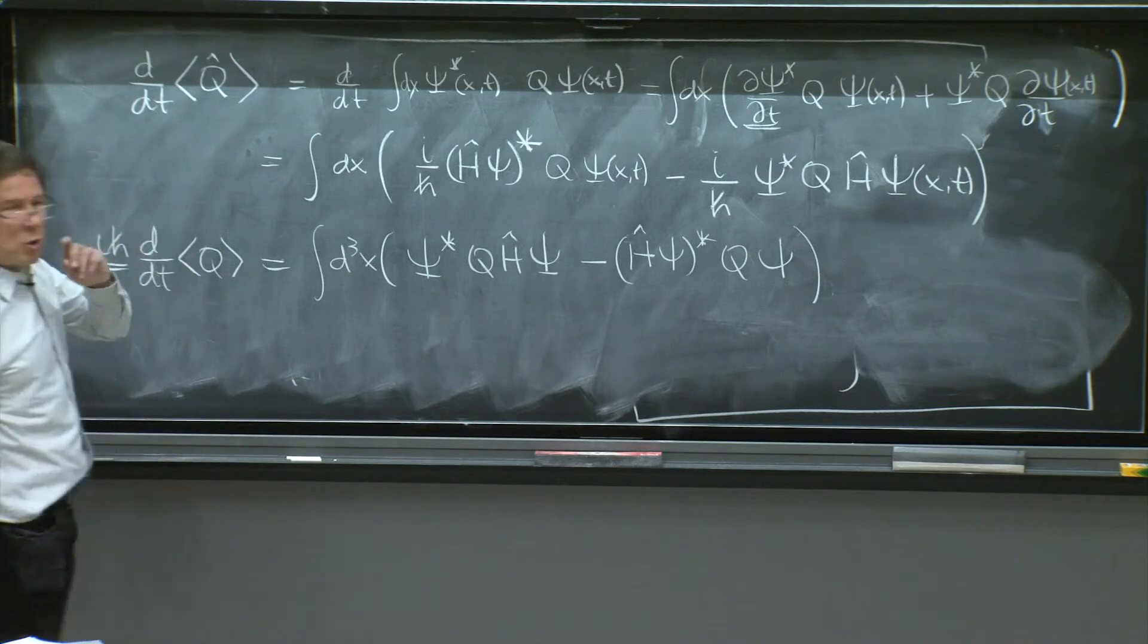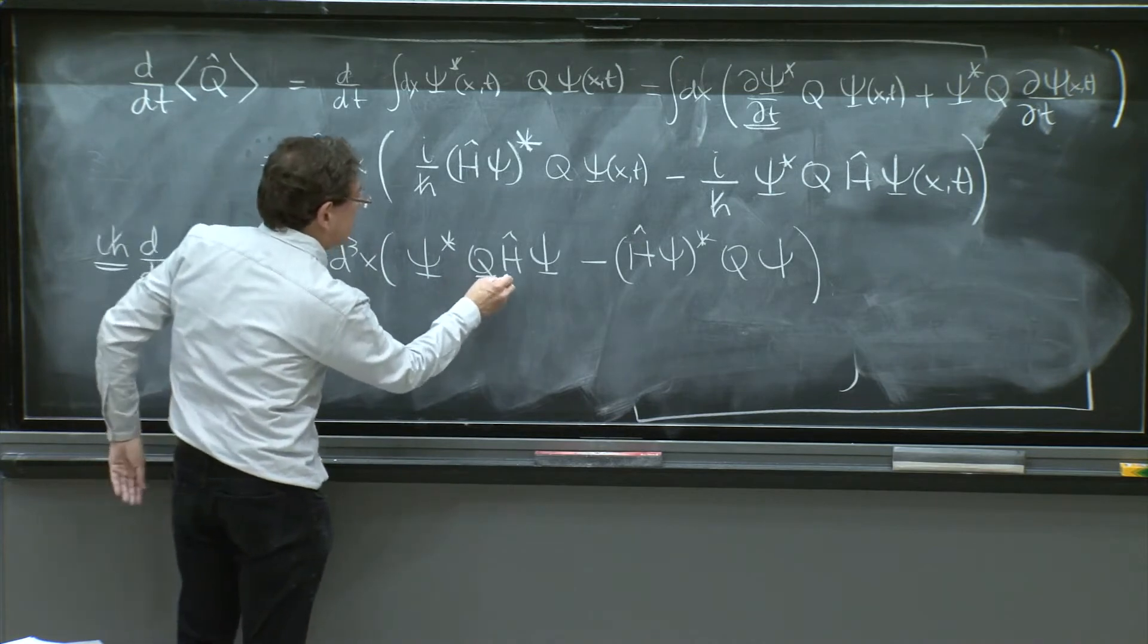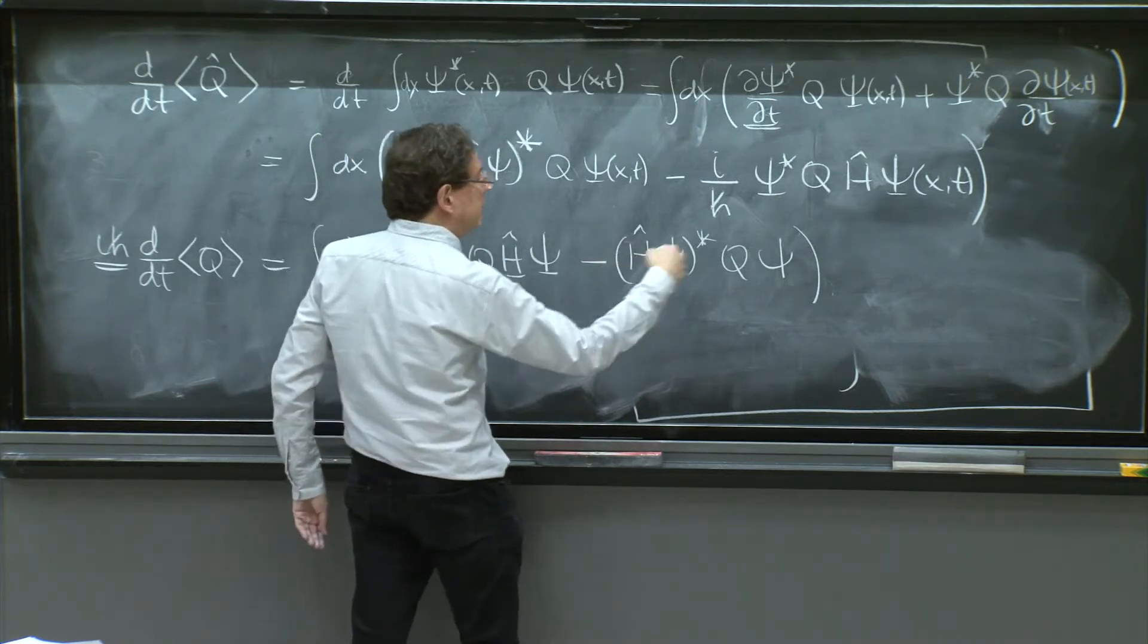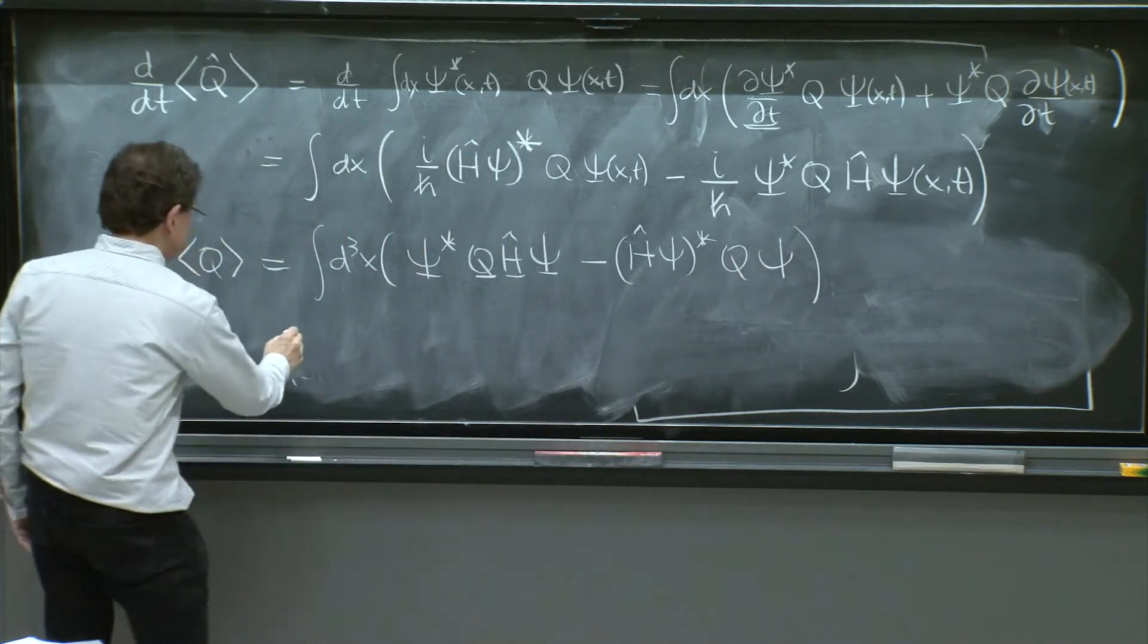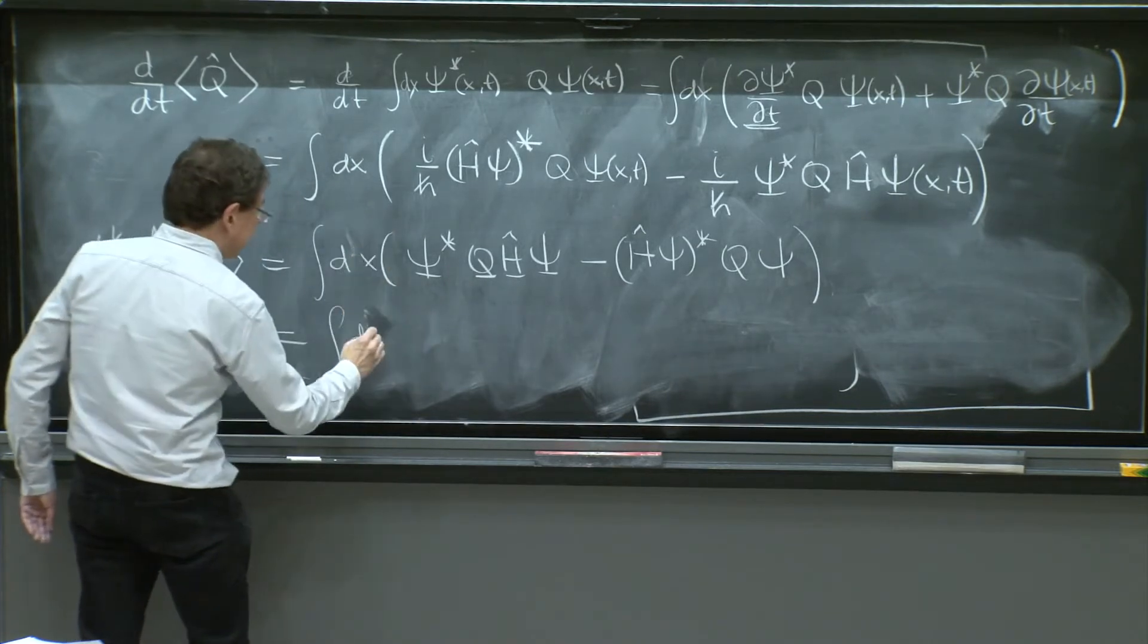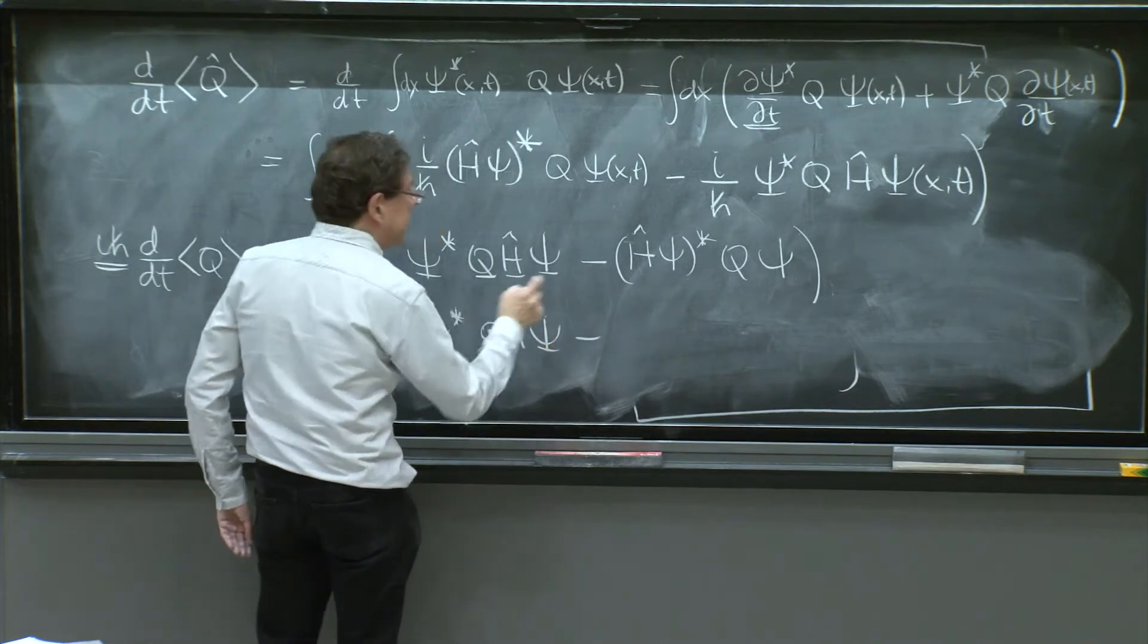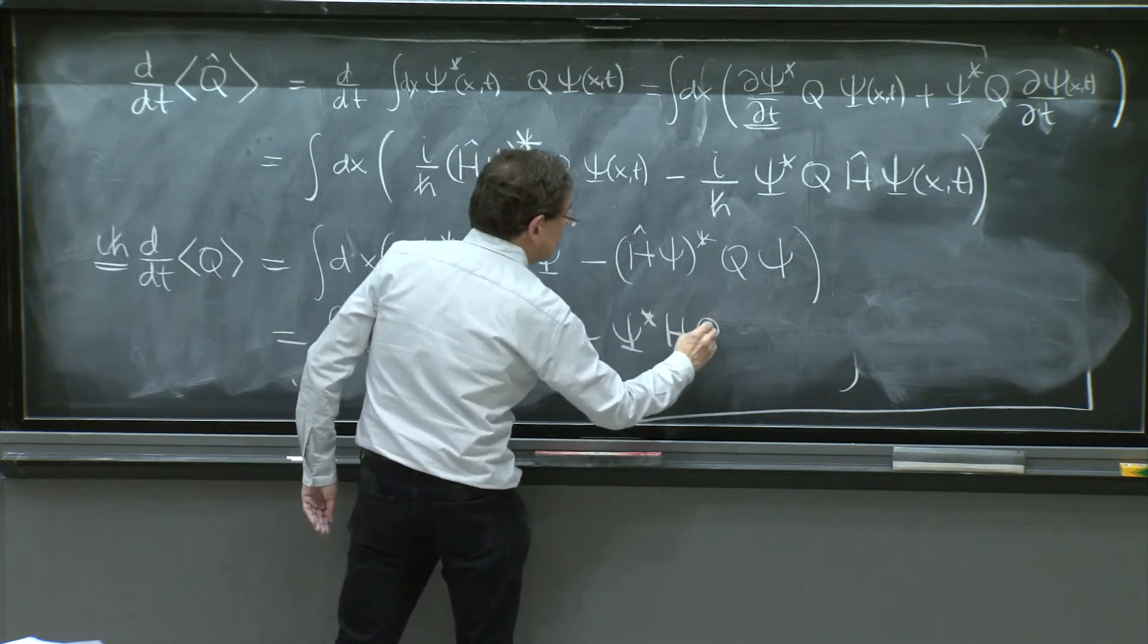And there's just one more thing we can do. Look. This is the product of q and h. But by hermiticity, h in here can be brought to the other side to act on this wave function. So this is actually equal to the integral d cube dx psi star q h hat psi minus, the h can go to the other side, psi star h q psi.